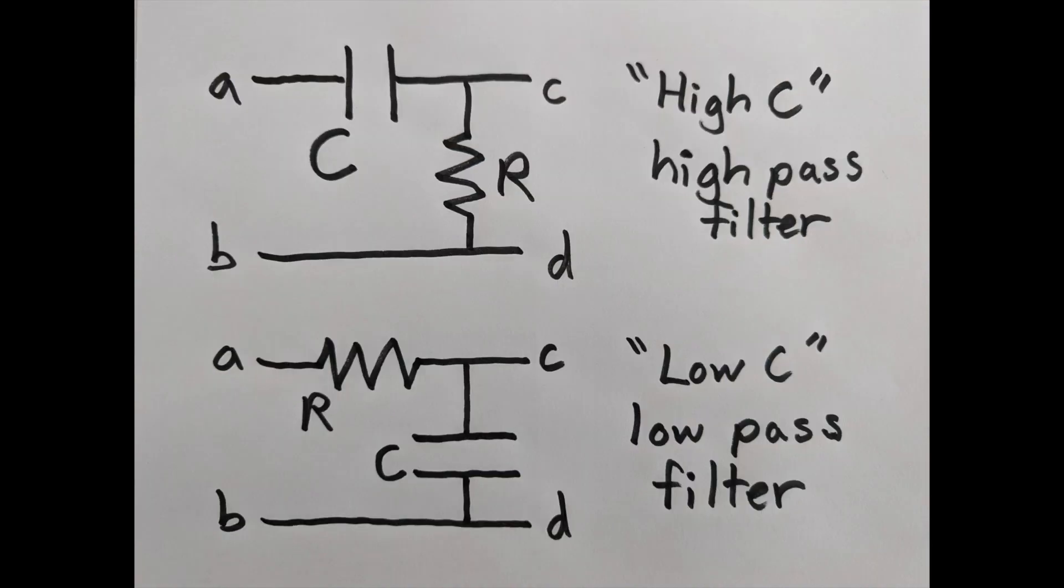Here are the first two filters. I call them high C and low C. It's a mnemonic. If the capacitor is up high, it's a high-pass filter. If the capacitor is low, it's a low-pass filter.